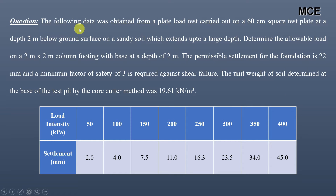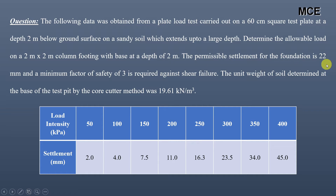The question states that the following data was obtained from a plate load test carried out on a 60 centimeter square test plate at a depth of 2 meters below ground surface on a sandy soil extending to a large depth. We need to determine the allowable load on a 2 meter by 2 meter column footing with a base at 2 meter depth. The permissible settlement is 22 mm, a minimum factor of safety of 3 is required against shear failure, and the unit weight of soil determined at the base by the core cutter method was 19.61 kN per meter cube.